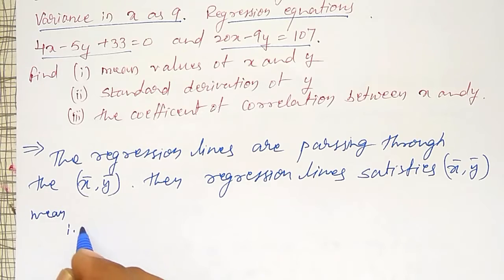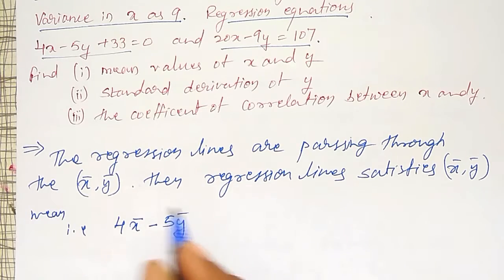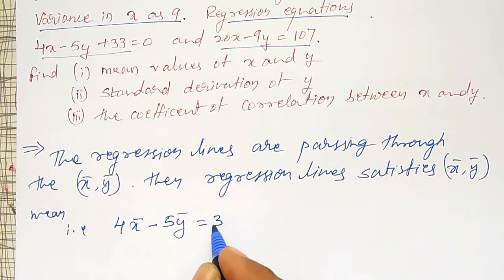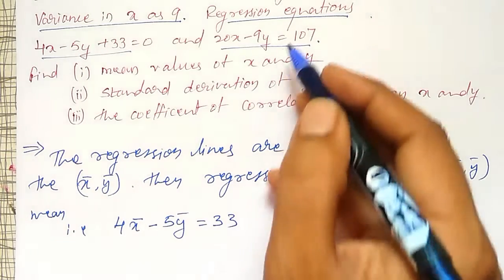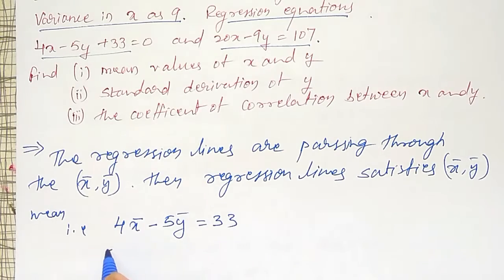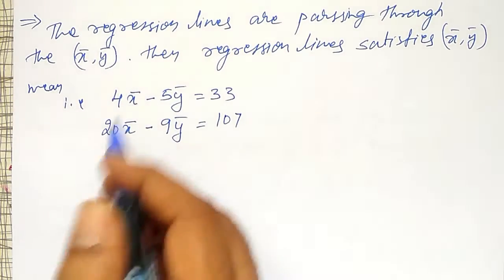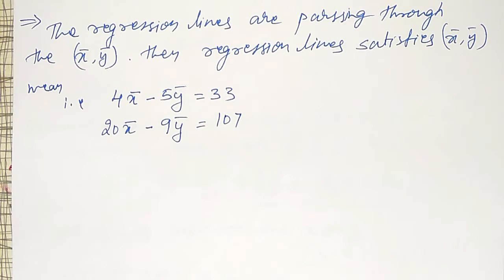That is, 4x̄ - 5ȳ = 33, x is replaced by x̄, y is replaced by ȳ. Like that, from the second equation, I can write it as 20x̄ - 9ȳ = 107. As they are satisfying the equations, I can write like this. Then, if I solve these two equations, I will get x̄ and ȳ.